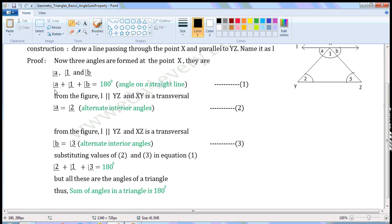In equation 1, Angle A is replaced by Angle 2, Angle B is replaced by Angle 3. So, Angle 2 plus Angle 1 plus Angle 3 is equal to 180 degrees.